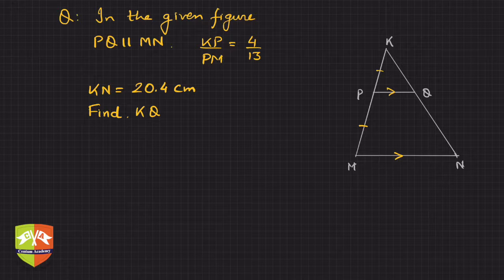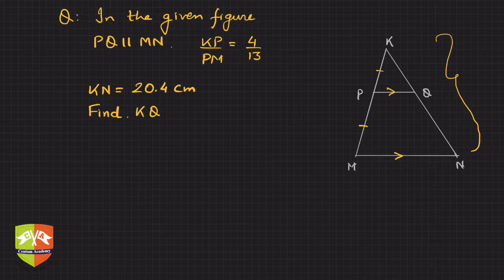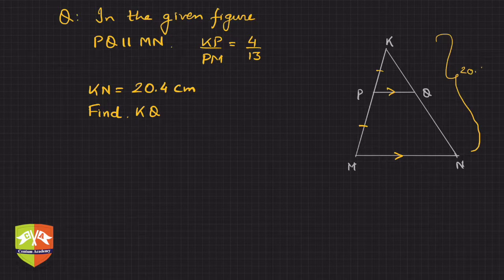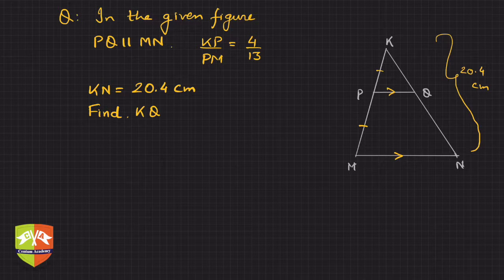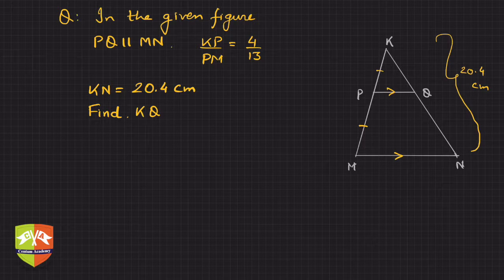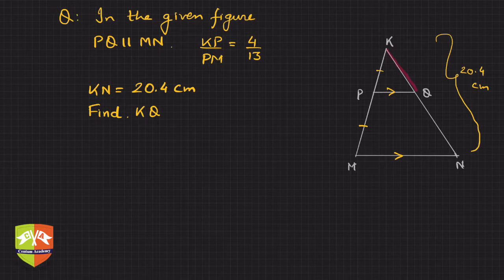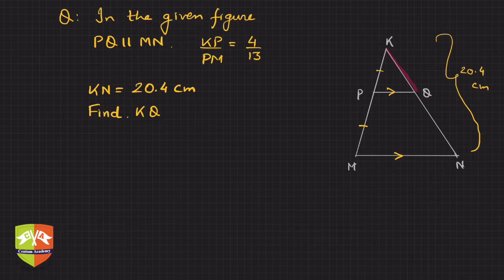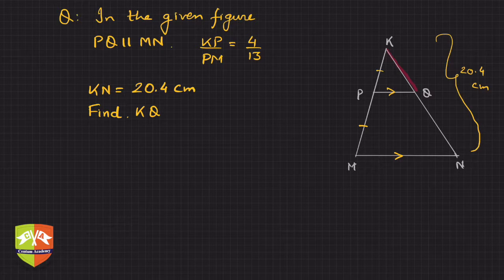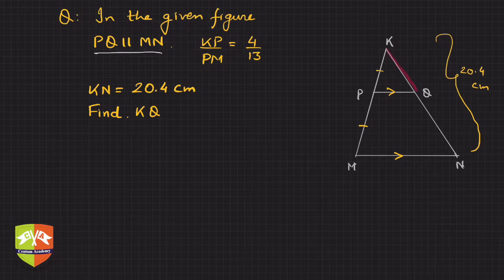And KN length has been given, this total KN length, and that is equal to 20.4 centimeters. You have to find the value of KQ. So let me highlight what we need to find out: KQ.